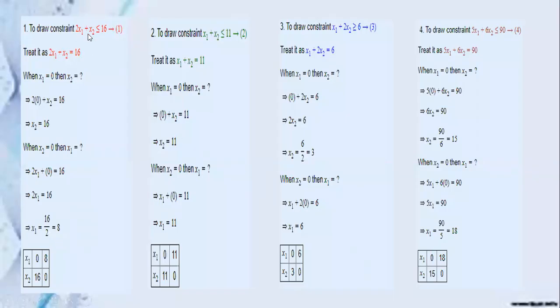We'll take the first constraint. The first step in the graphical method is to convert the inequalities into equations. Here you change the less than or equal to sign into an equal to sign. That is the first step in the graphical method for all the constraints.